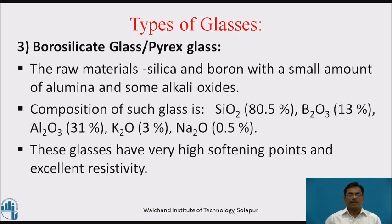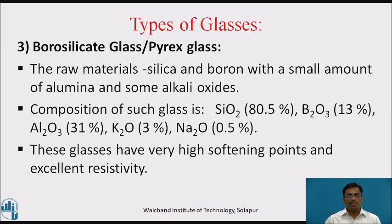Third type of glass is borosilicate glass, also known as pyrex glass. The raw materials used are silica and boron with a small amount of alumina and some alkali oxides. The composition is: SiO2 approximately 80.5%, B2O3 13%, aluminium oxide 31%, K2O 3%, Na2O 0.5%. These glasses have very high softening points and excellent resistivity.